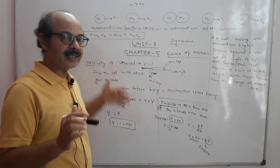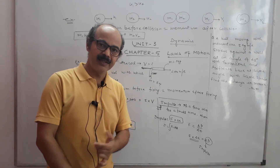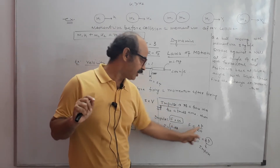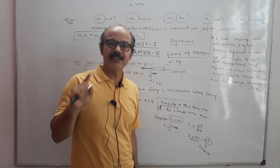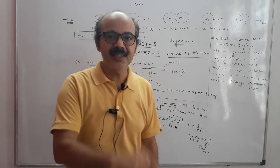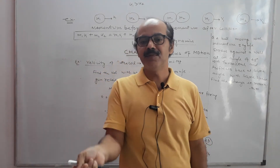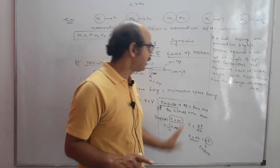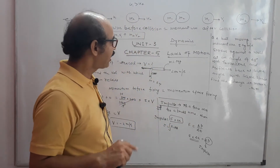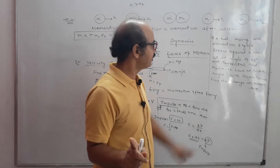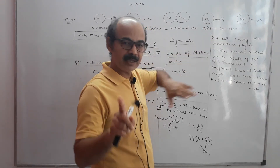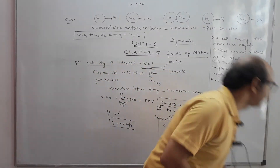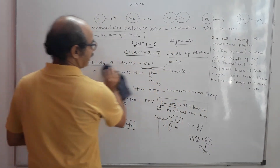So we have done conservation of linear momentum, solved a numerical on it, and covered impulse. Remember: to find impulse, it is not always necessary to have force — we can also find impulse from change in momentum, because impulse equals change in momentum. Now we will do one more numerical, which will also help revise vectors.